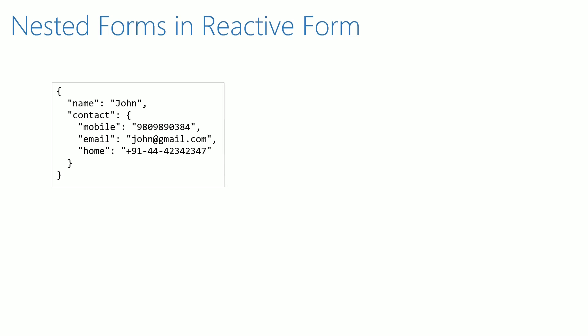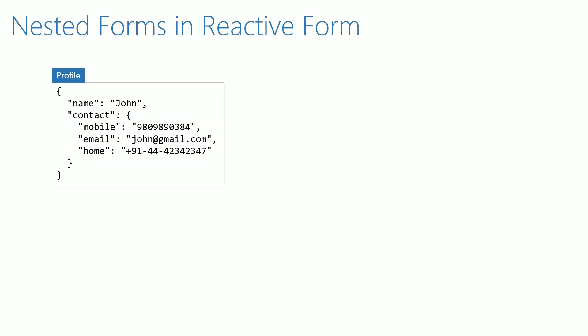Consider this JSON format. This is a sample data that represents a data model in the backend. This data represents a person's profile. In this model, we have a name property to represent a person's name. The contact property represents the contact details of the person, and it is an object grouping together contact details like mobile number, email, and home contact number.